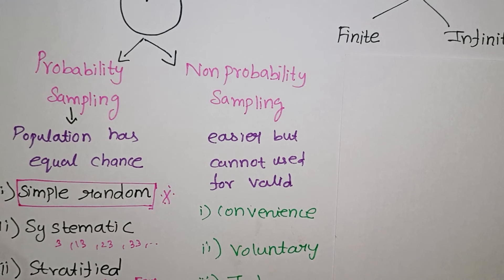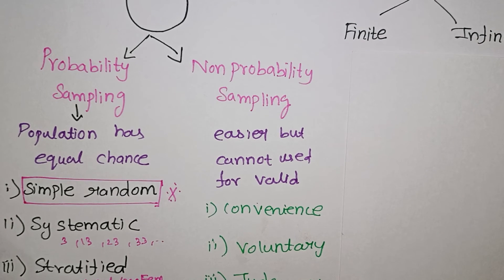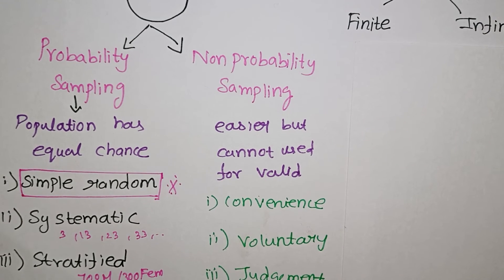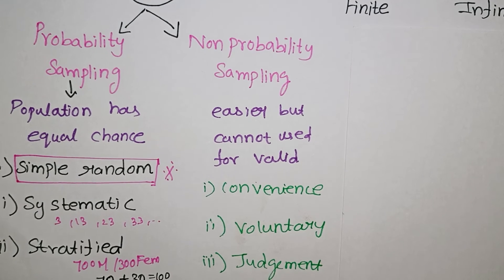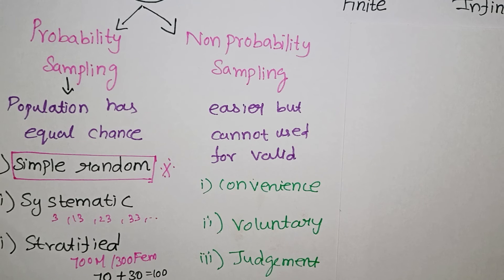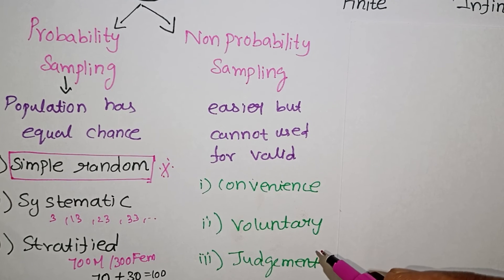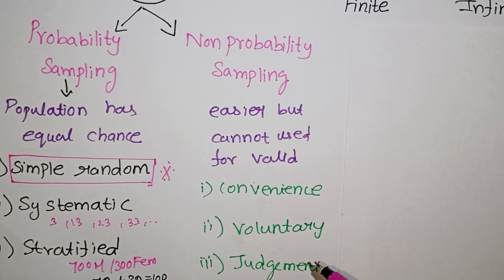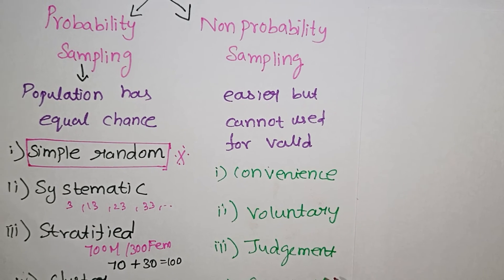Voluntary sampling is when participants choose to respond — for example, students in a particular hostel or area who voluntarily provide data. You can also collect voluntary data online, such as through a TV show where viewers submit responses.